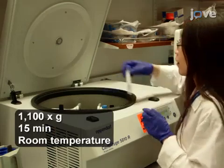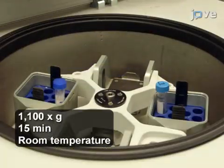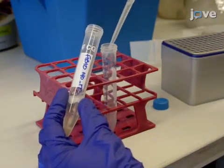Centrifuge at 1,100 times G for 15 minutes at room temperature. Transfer the supernatant to a new 15 milliliter centrifuge tube.